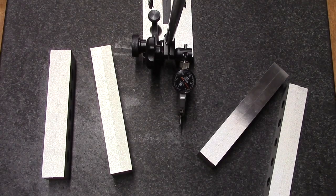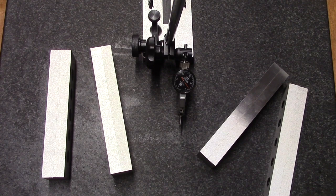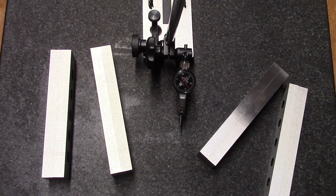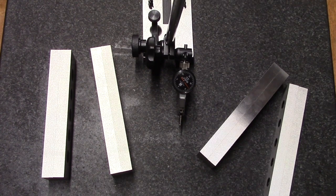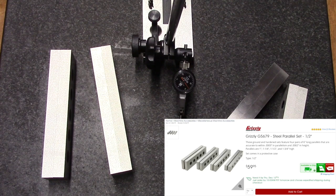Hello again, this is the Maine Machinist. I have here on my granite table a set of half inch parallels from Grizzly Industrial. G5679 is the part number.